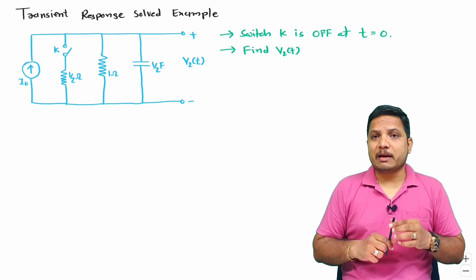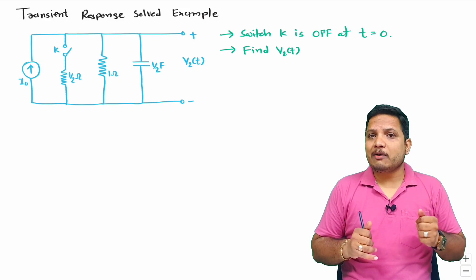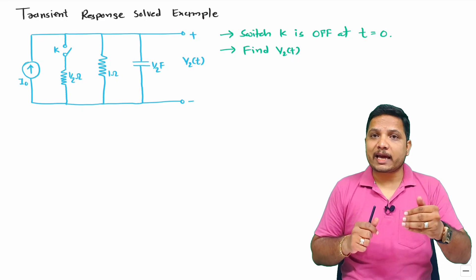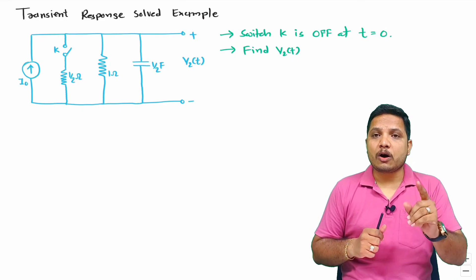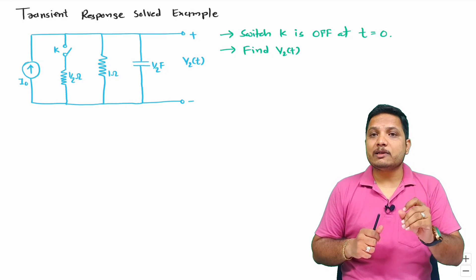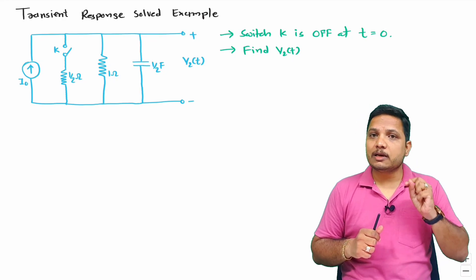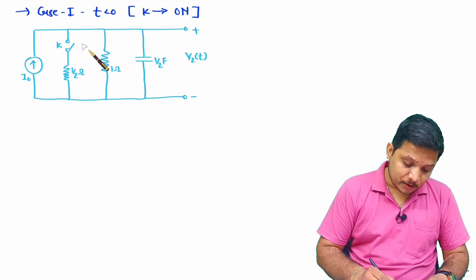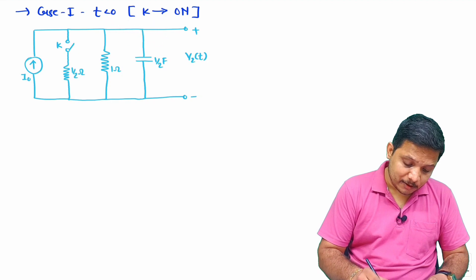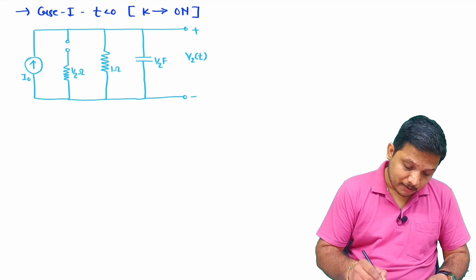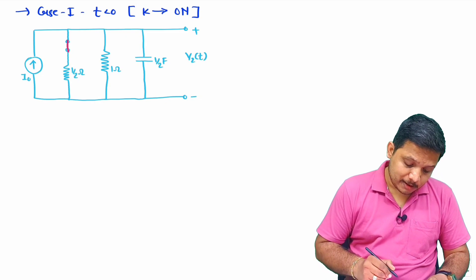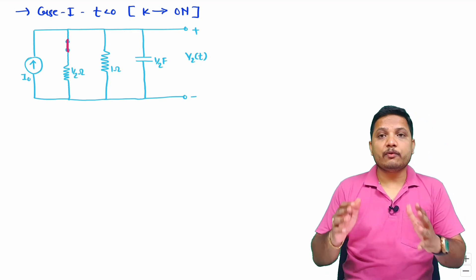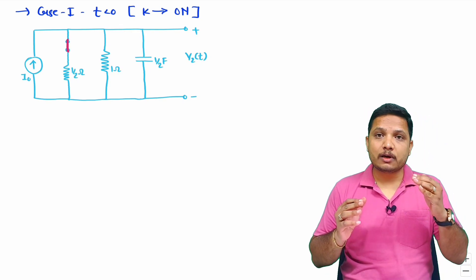Let us solve this step by step. As we solve questions based on transient response, we should be bisecting situations based on time frame. Initially switch is on before t equals 0. So for t less than 0, switch is on, and that switch was on for a very long period.